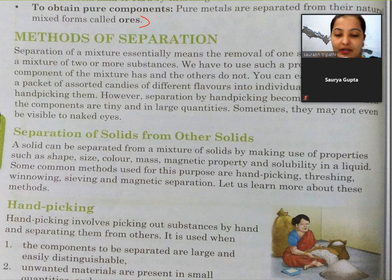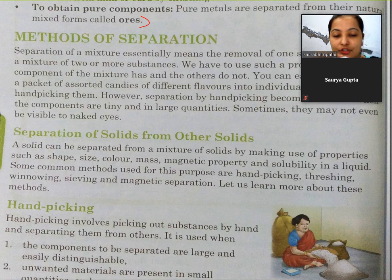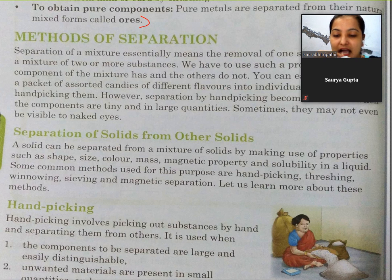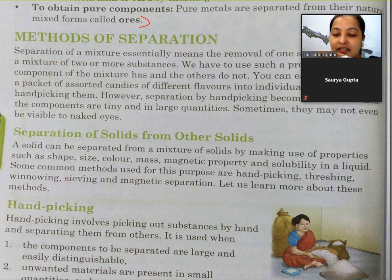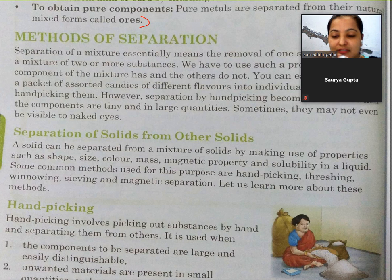Separation of solid from other solids. A solid can be separated from a mixture of solids by making use of properties such as shape, size, color, mass, magnetic property, and solubility in a liquid. Some common methods used for this purpose are handpicking, threshing, winnowing, sieving, and magnetic separation. Let us learn more about these methods.